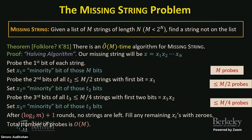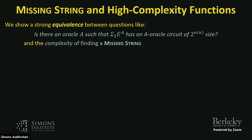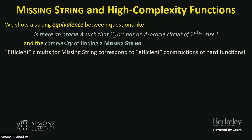There's a paper called 'Diagonalization Games' that appeared on arXiv in early January that nails what's inside the big-O. We're going to show a strong equivalence between questions like 'is there an oracle A so that Sigma_2^E with A has A-oracle circuits of size 2^{o(n)}?' and the complexity of finding a missing string. Efficient circuits for missing string correspond to efficient constructions of hard functions — if you design a good algorithm for missing string, you're actually proving a better lower bound. This is directly algorithms implying lower bounds.